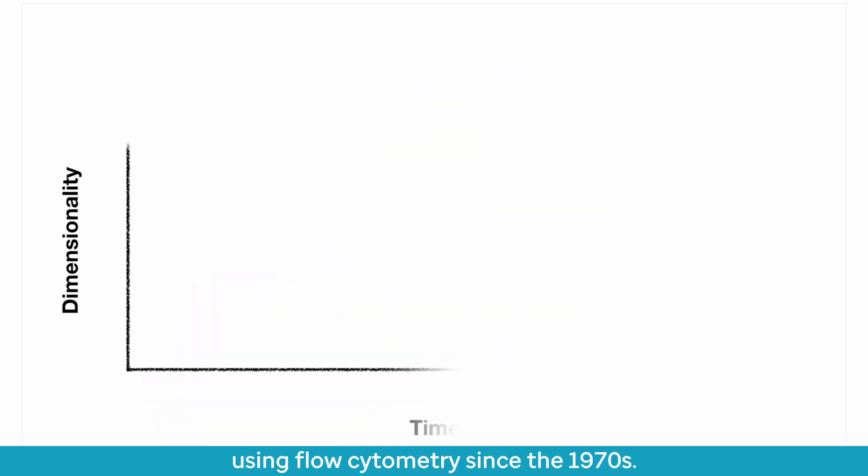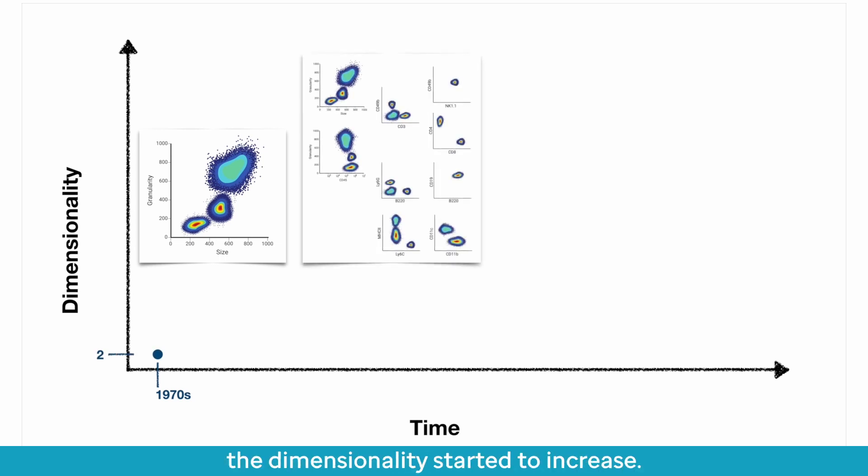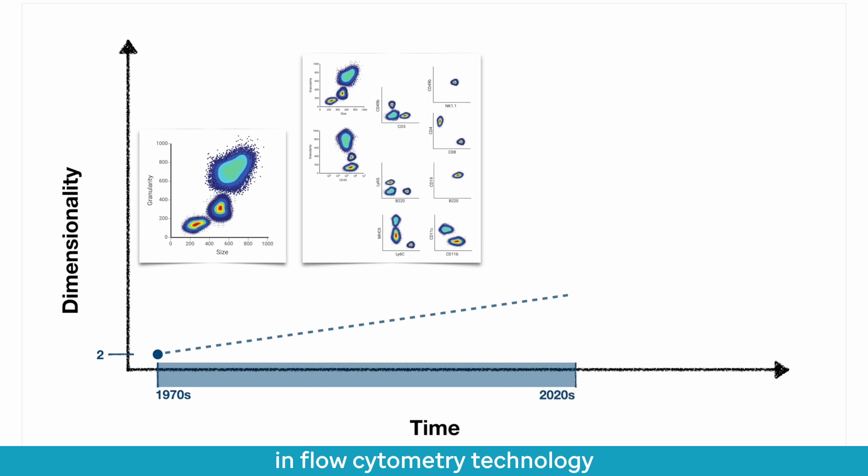Immunologists have been using flow cytometry since the 1970s. At that time, we were looking at cells in terms of size and granularity, which is two dimensions. When they started incorporating fluorescent tags, the dimensionality started to increase. Over the last 50 years, advances in flow cytometry technology have allowed us to measure up to 60 markers simultaneously.